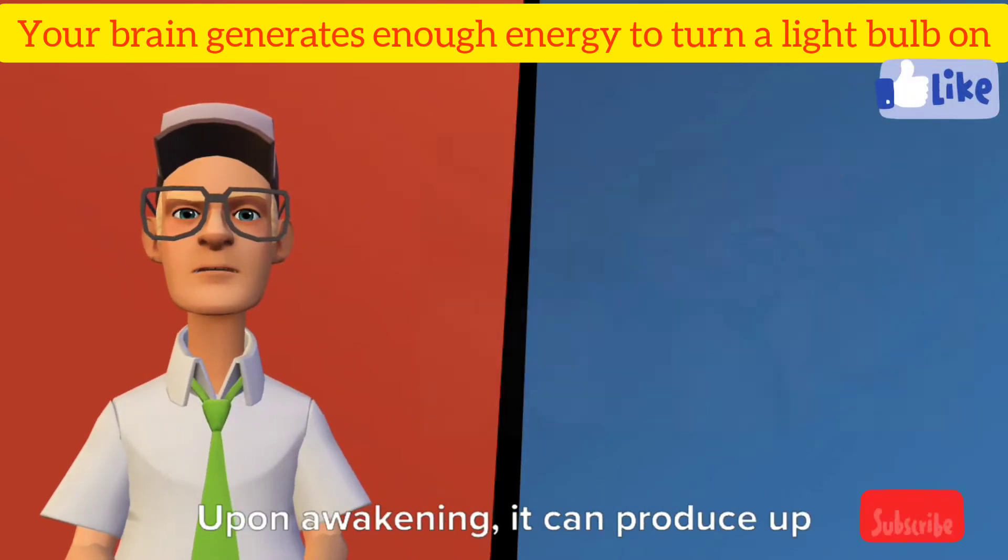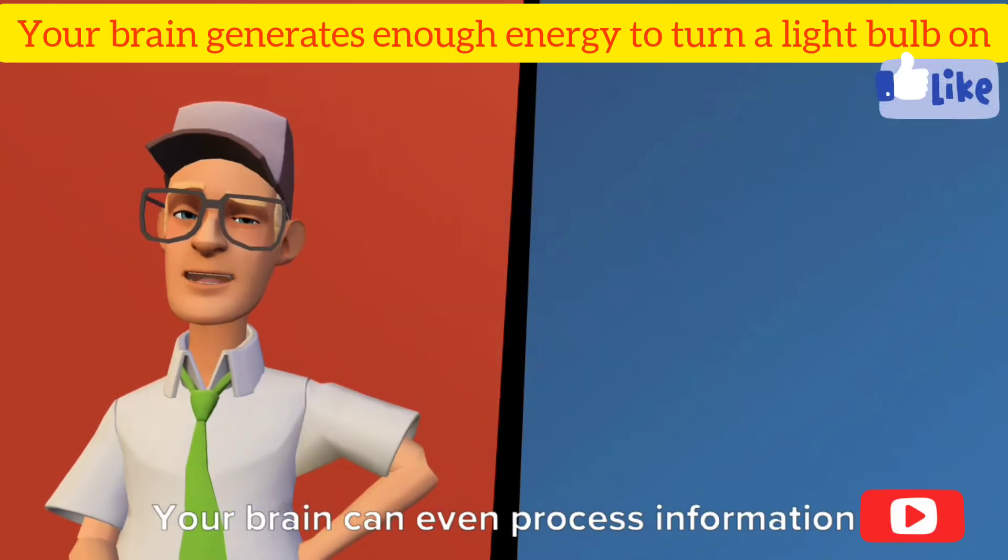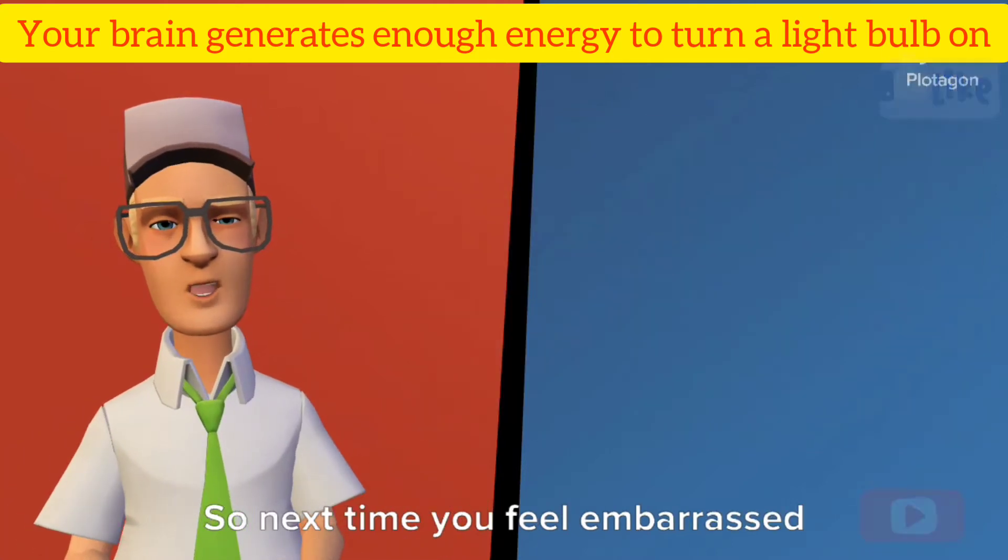Upon awakening, it can produce up to 30 to 35 watts. Your brain can even process information as fast as 120 meters per second, or 268 miles per hour.